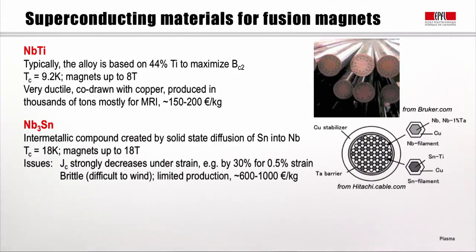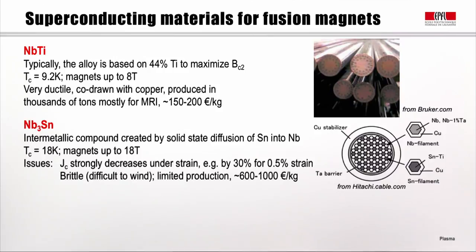We're now ready to discuss superconducting materials that in practice can be used for fusion magnets. As stated, they are all type 2. The first is niobium titanium, typically an alloy based on about 44% titanium to maximize the critical field BC2. Its critical temperature is 9.2 Kelvin, and magnets built from this material can go up to 8 Tesla. It's a very ductile material, produced by co-drawing with copper, and produced in large quantities mostly for medical MRI applications.